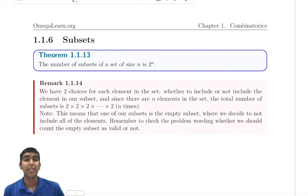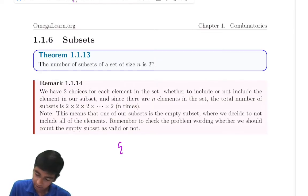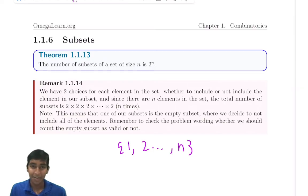Next, let's look at subsets. The number of subsets of a set of size n is 2 to the n. The reason this is true is because let's say we have n elements, 1, 2, all the way to n. The number of subsets, well for each element, there's two choices. It's either part of the subset or not part of the subset. So 2 to the n. That's it. Now this is a very useful property that's useful in many combinatorics problems.